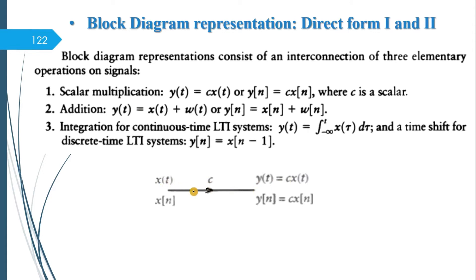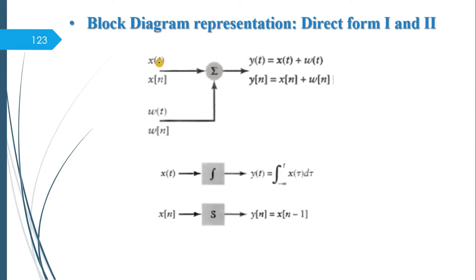For scalar multiplication: if x(t) passes through a constant c, then y(t) = c·x(t). This applies to both continuous and discrete time: c·x(n). For addition: if x(t) and w(t) are inputs to a summing junction, the output is x(t) + w(t). Similarly for discrete time, x(n) + w(n). By default the sign is plus; if minus is written, it's subtracted.